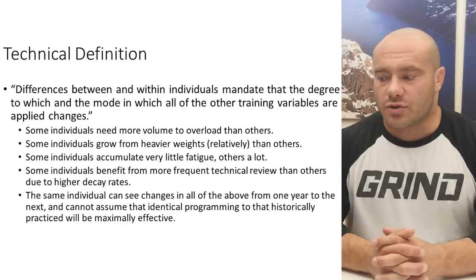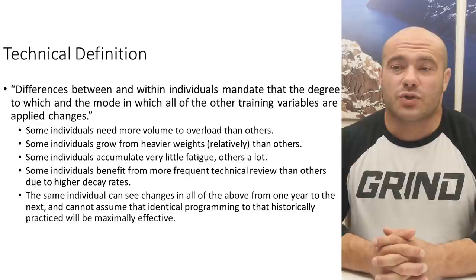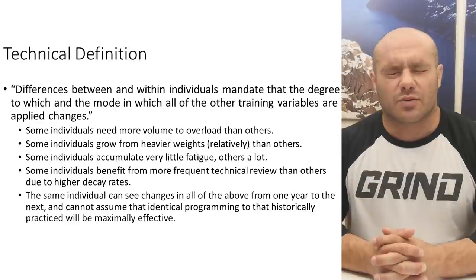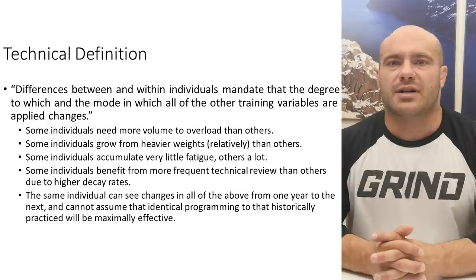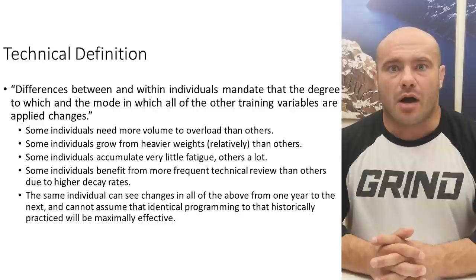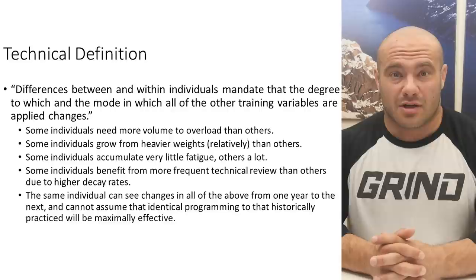For example, some individuals need more volume to overload than others. What is past their maximum recoverable volume is what for others isn't even maintenance volume — that happens. So you can't program the same volume for everyone. Some individuals grow from relatively heavier weights than others — not just in terms of strength, but because of fiber type differences. Some individuals in some muscle groups grow really well from sets of five, six, seven, or eight reps. Other individuals won't grow much at all unless sets are 12, 13, 14, or 15 reps each.